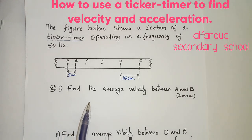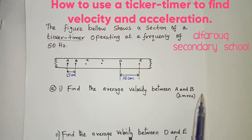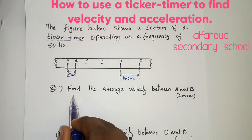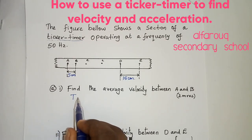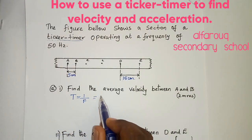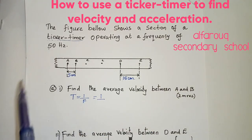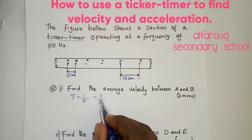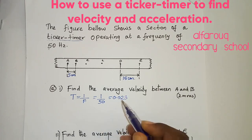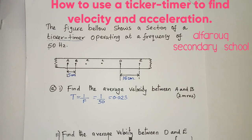The first question is asking: find the average velocity between A and B. Before we start finding the velocity, first you have to find the time taken between two dots. Time is equal to 1 over the frequency. So we have 1 divided by 50 Hz, which gives us 0.02 seconds — that is the time taken between two dots.